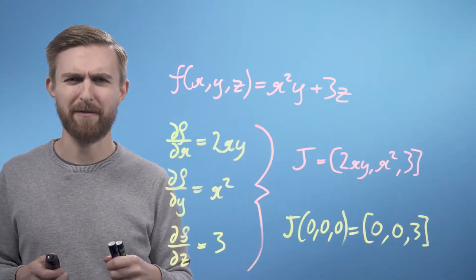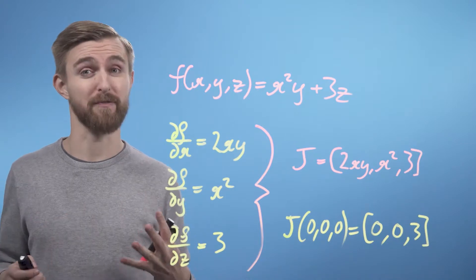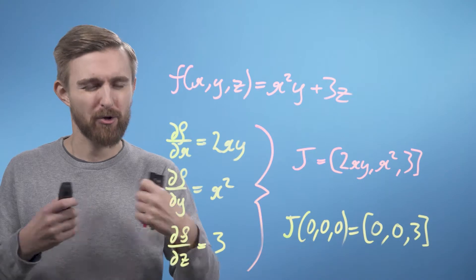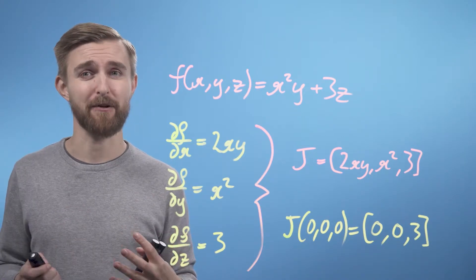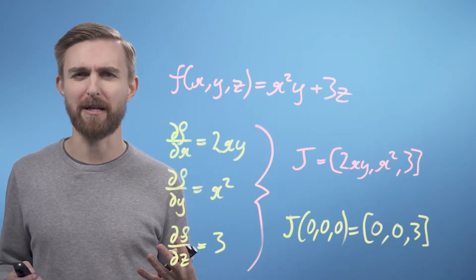Some of the numerical methods that we will discuss later in this course require us to calculate Jacobians in hundreds of dimensions. However, even for the 3D example we just solved, graphical representation is already quite difficult. So we are now going to drop down to two dimensions so that we can actually see what's going on here.